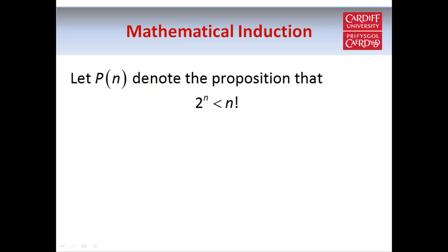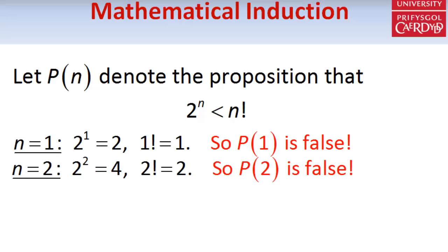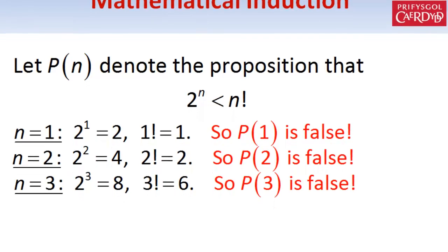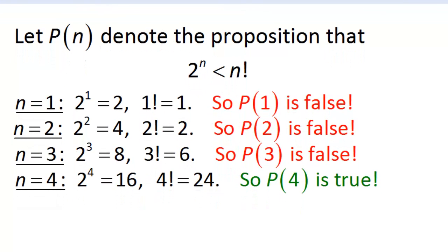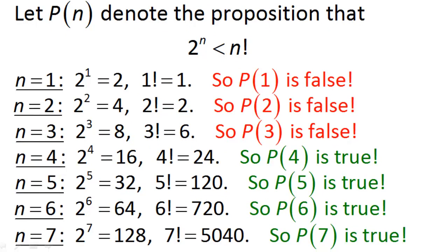Let's try some specific values of n to see what happens. If n equals 1, then 2 to the power n is 2, and n factorial is 1, so the statement doesn't hold when n equals 1. Similarly, the statement doesn't hold when n equals 2 or n equals 3. However, when n equals 4, 2 to the power 4 is 16 and 4 factorial is 24, so the statement does hold. And trying more values, the statement also holds for n equals 5, n equals 6, and n equals 7.